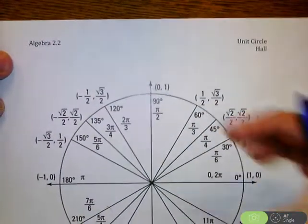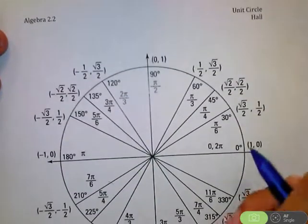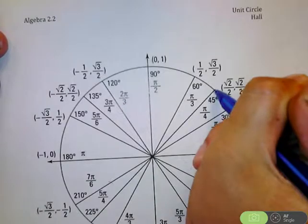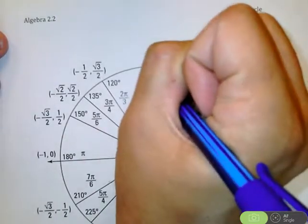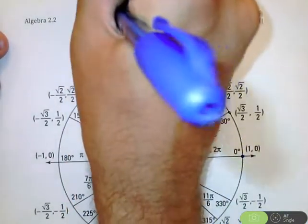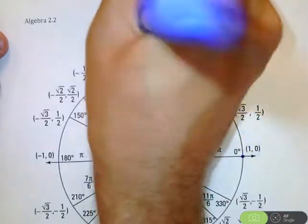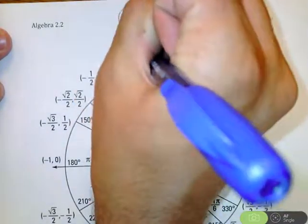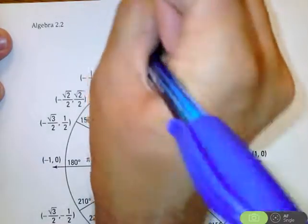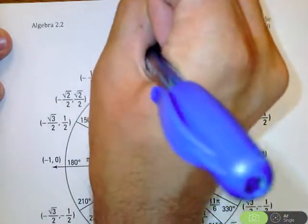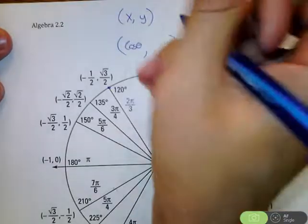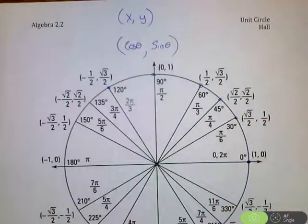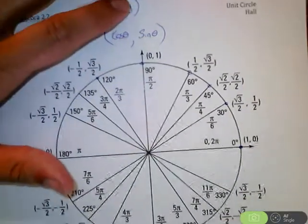The important thing that you need to know from this is what we care about is the coordinates of these endpoints all the way around. Each of these coordinates is an XY coordinate. Now why these are important is the X coordinate is going to coincide with cosine and the Y coordinate is going to coincide with sine. So X is cosine, Y is sine.